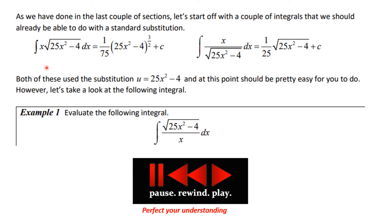By way of introduction, consider the following two examples. If I ask you to evaluate the indefinite integral of x times the square root of 25x² minus 4 dx, you do a u-substitution — u would be what's underneath the radical. This x dx would be part of du, and you could complete this by adding 1 to the exponent, dividing by the new exponent, and doing some simplification.